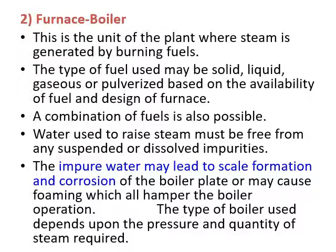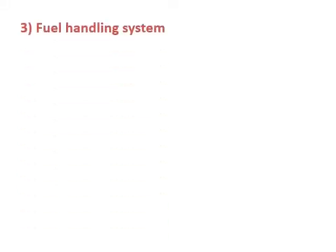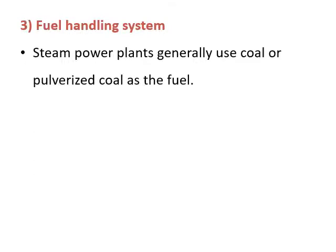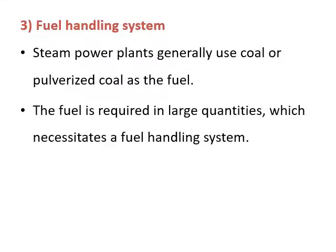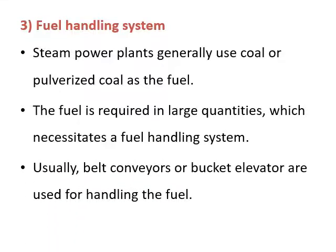If scale formation happens, the tube life will be very short. The next component is the fuel handling system. In a steam power plant, coal or pulverized coal is generally used as fuel, and it is required in large quantities, necessitating a fuel handling system. Usually belt conveyors and bucket elevators are used for handling the fuel.